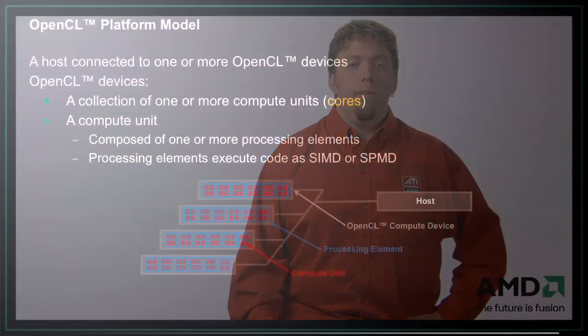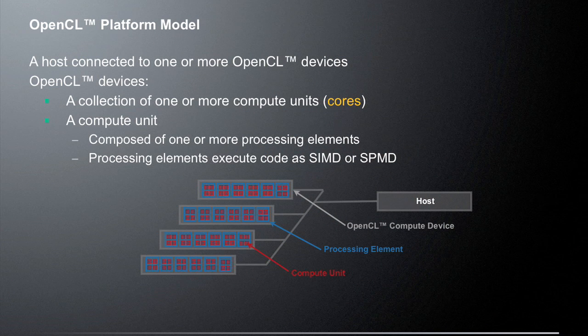Let's talk about the OpenCL platform model. A host is connected to one or more OpenCL devices. On the bottom of the slide we have what is a host — so the host would be just your computer, any CPU that runs your standard operating system and your application. That host is going to be connected to one or more OpenCL devices. An OpenCL compute device would be something such as a GPU, a DSP, or even a multi-core processor — just anything that's going to provide processing power for OpenCL.